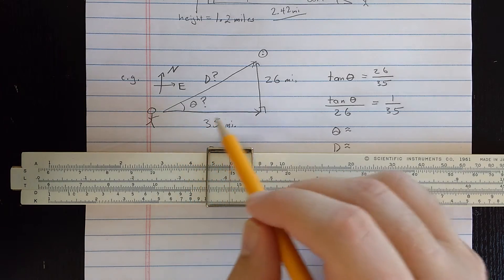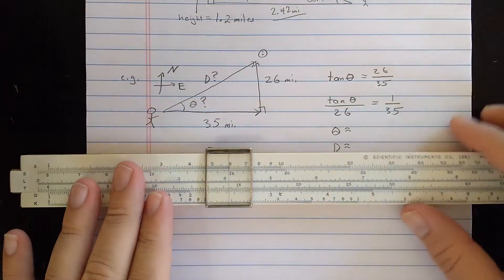For the last example, we're going to have to use the tangent. So let's say Bob is going for a long hike, and he knows that he's looking at his map, and he needs to go 35 miles east and 26 miles north, but he's going to cut directly across. He wants to know at what angle north of east that he should walk, and about how long that walk is going to be, length d. So he wants to find theta and d.